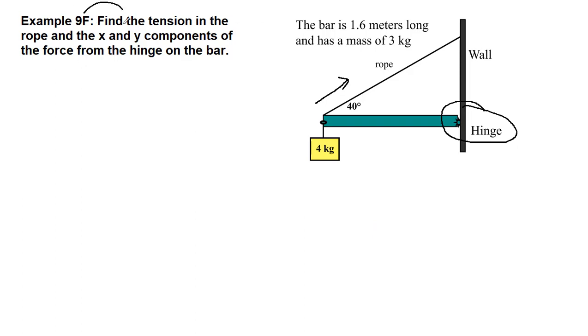So example 9F, we want to find the tension in the rope, so that's one of the forces, and the x and y components of the force from the hinge on the bar. We have a lot of information just in the question that we're going to make sure we pull apart so we really understand what's going on here. But we have the real picture, and we want to draw the force diagram next, so free body diagram.